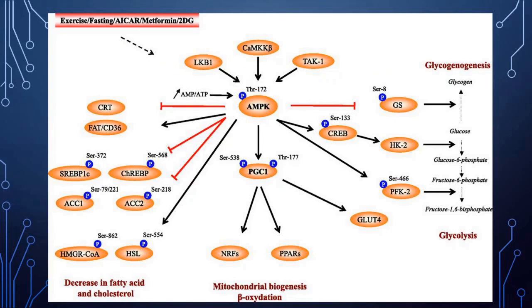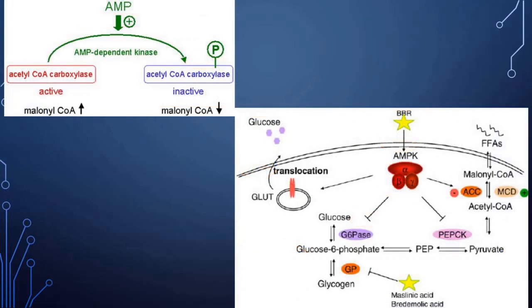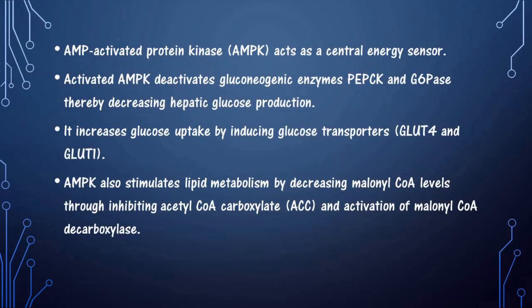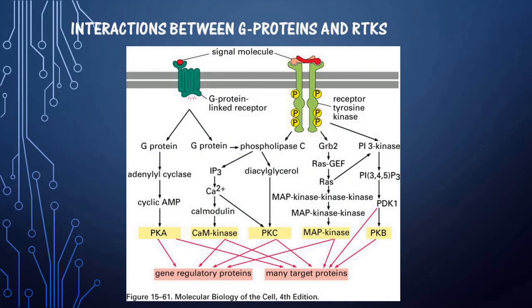AMP kinase acts as a central energy sensor. Activated AMP kinase can deactivate phosphoenolpyruvate carboxykinase and glucose-6-phosphatase, thereby decreasing hepatic glucose production, and increases glucose uptake by inducing glucose transporters GLUT4 and GLUT1. AMP kinase also stimulates lipid metabolism by decreasing malonyl-CoA levels through inhibiting acetyl-CoA carboxylase and activation of malonyl-CoA decarboxylase.